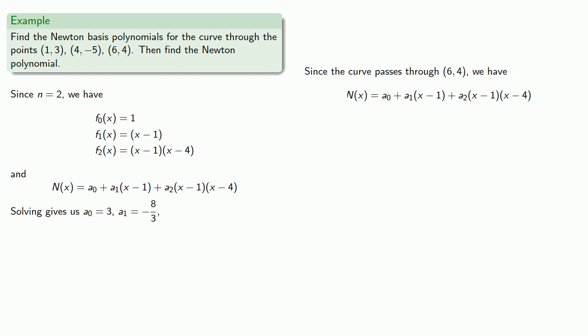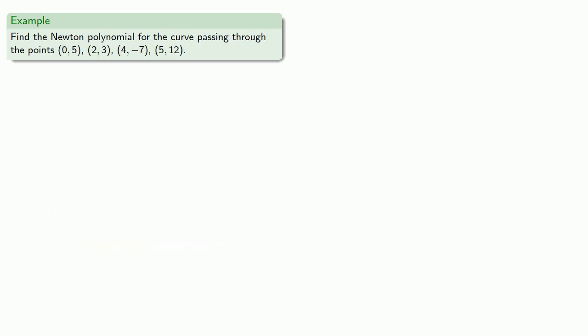And again, the curve passes through (6, 4). So filling in the values that we already know, we find that if x is equal to 6, y is equal to 4. And this gives us an equation with only one unknown. And we can solve for that last coefficient. And since we know the coefficients, we can write the Newton polynomial. And this works no matter how many points we have.